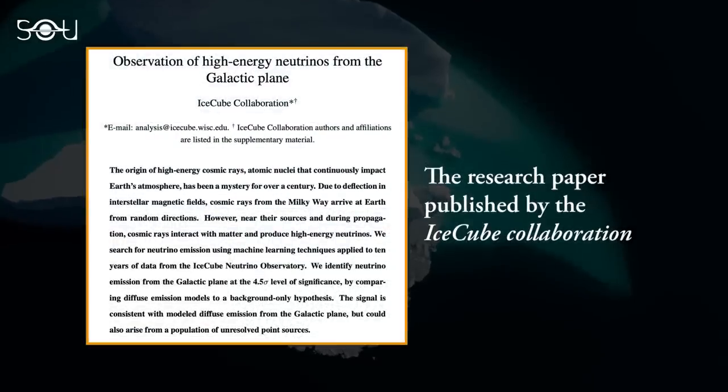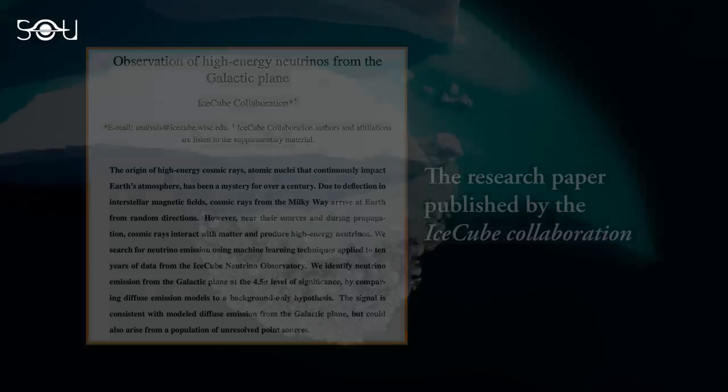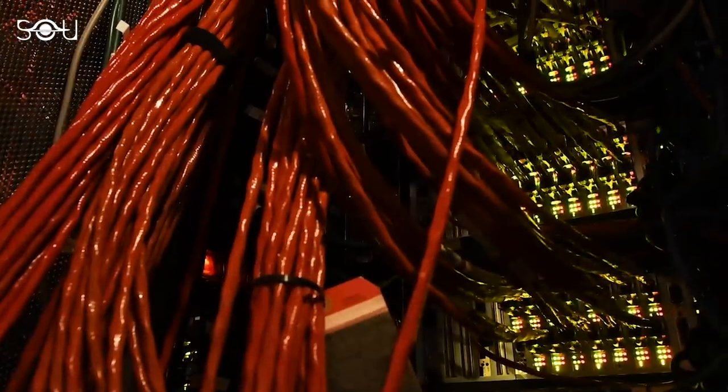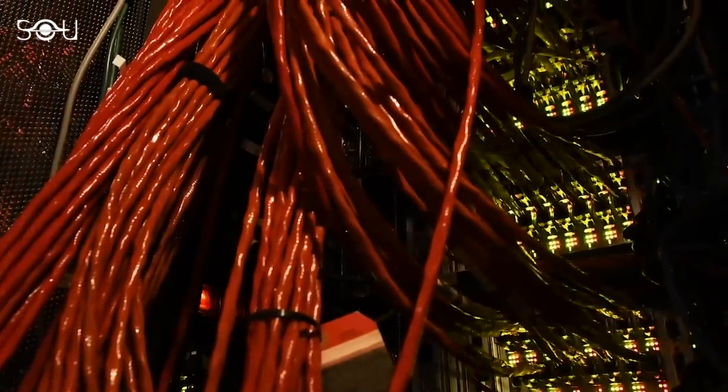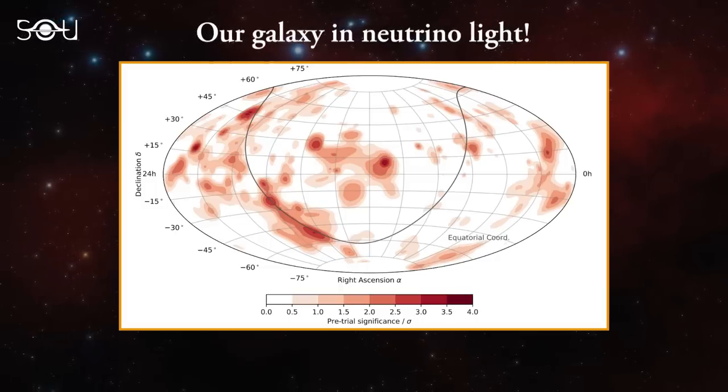In this groundbreaking study, researchers harnessed the power of machine learning to analyze more than 60,000 detected neutrino cascades collected over a decade. By inputting this vast dataset into their algorithm, they generated a captivating map unveiling the sources of neutrinos scattered across our galaxy, as depicted in this figure from the research paper.